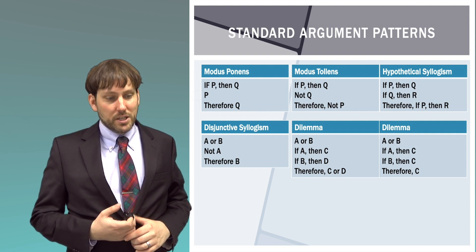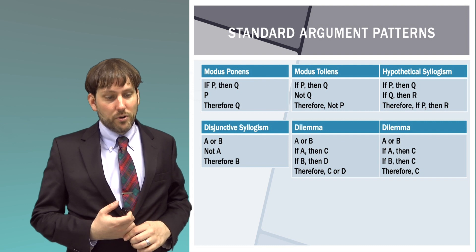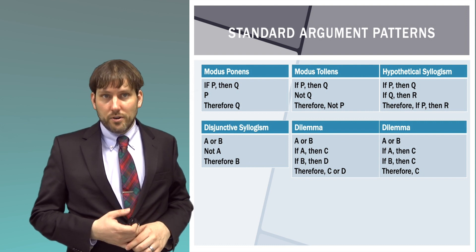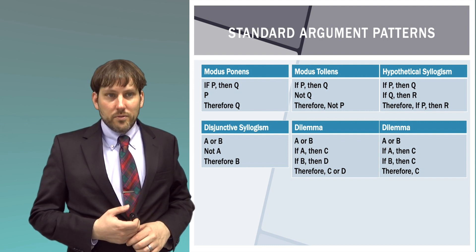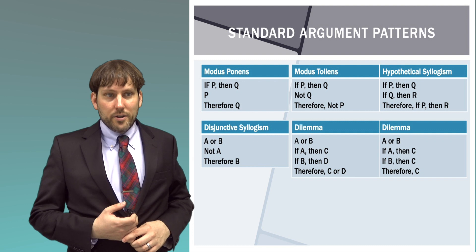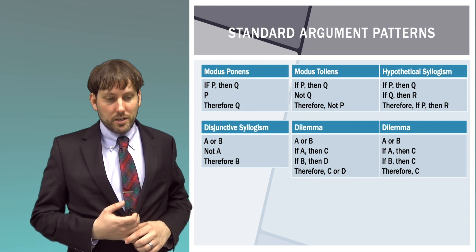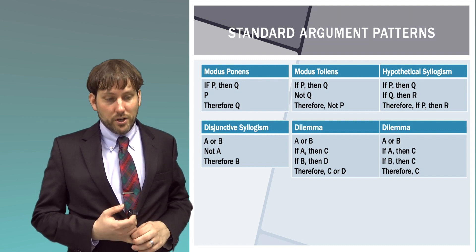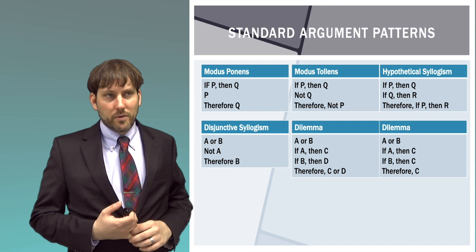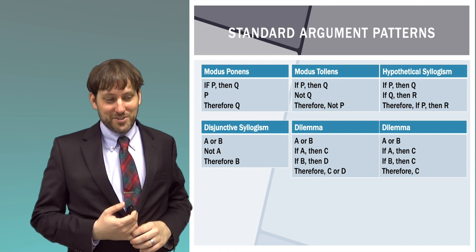Hypothetical syllogism: if P, then Q; if Q, then R; therefore if P, then R. So, if I am cold, then it is winter. If it is winter, then it is snowing. Therefore, if I am cold, then it is snowing.